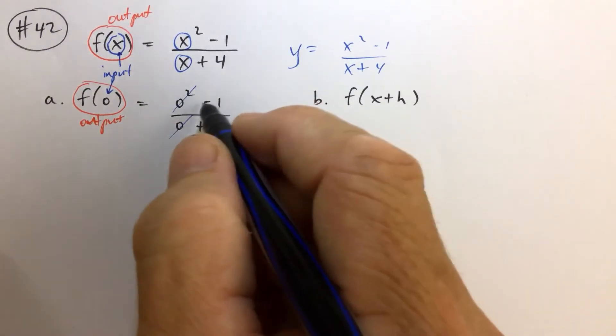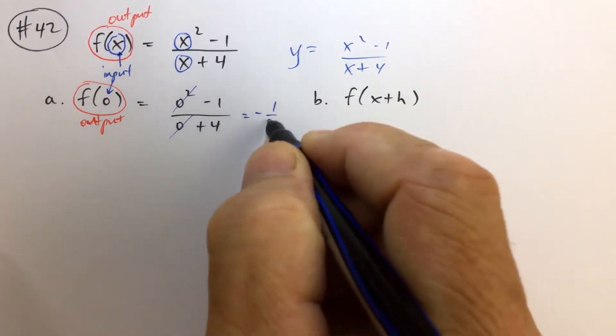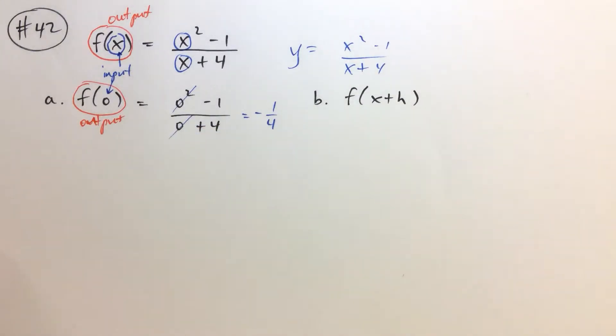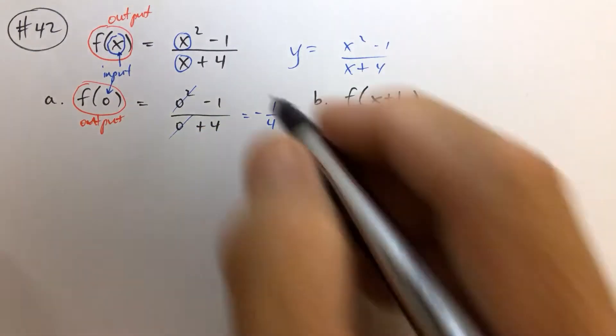So this whole thing is just a bunch of numbers, and we have to simplify it a little bit here. 0 squared is 0. So we have negative 1 fourth. So if the input is 0, it means the output is negative 1 fourth.